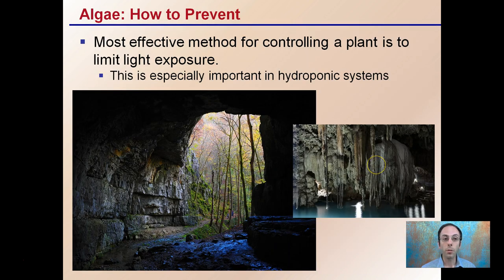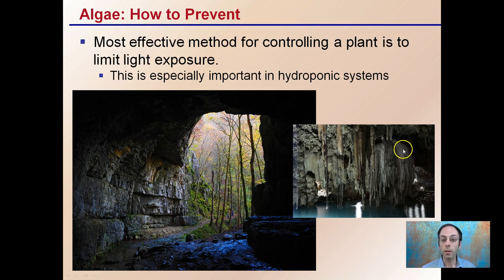How to prevent it? The most effective method for controlling algae is to limit the light exposure. This is especially important in hydroponic systems. You can see this cave region where there's light getting in there's algae, and where there's no light there's basically no algae. Here deeper in the cave we see evidence of that. So by blocking out the light, you can easily prevent the algae from forming.